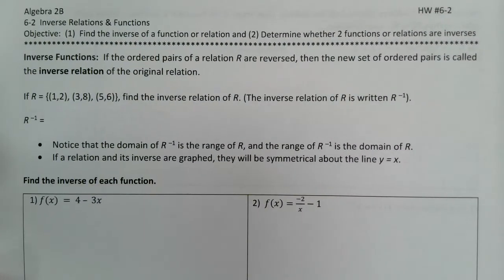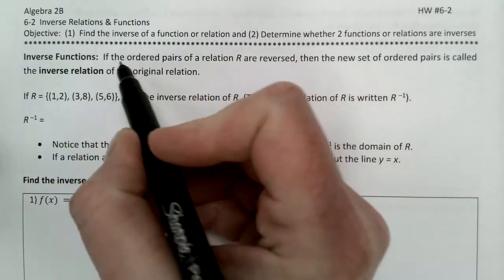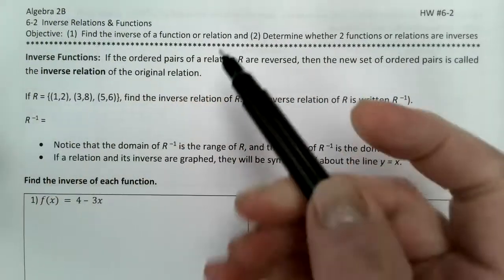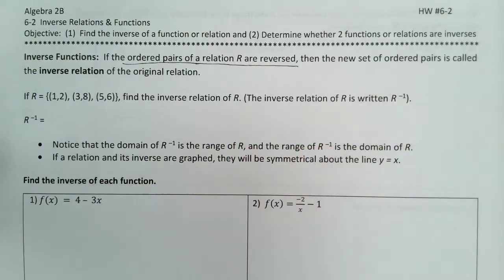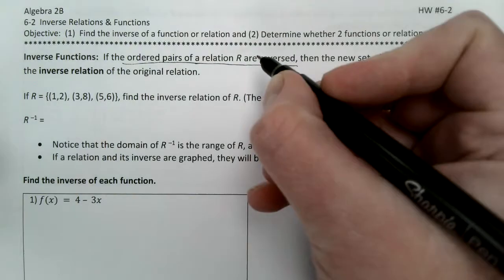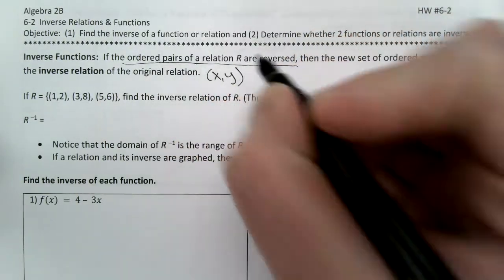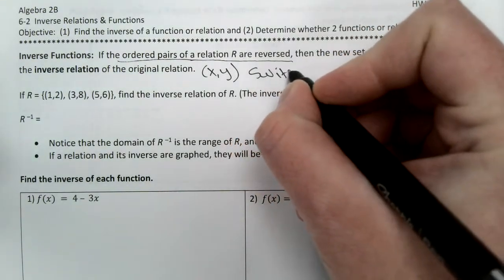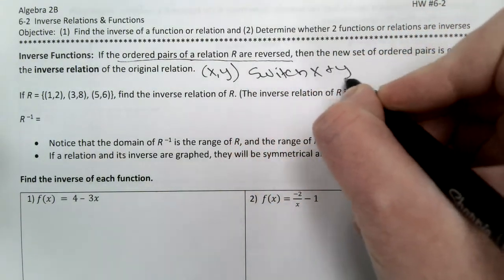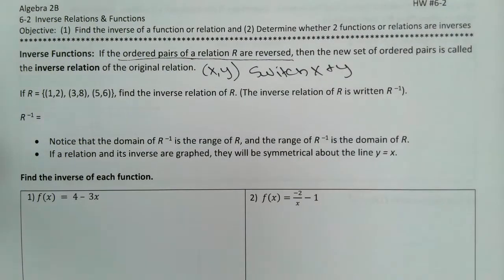Hey, Algebra 2. Today I'm going to teach you how to find the inverse of a function. The definition says the inverse of a function is if the ordered pairs are reversed. An ordered pair is simply x, y, and if they're reversed, we're going to switch them — switch x and y. We're going to keep coming back to this because when we find the inverse later, that is all we're doing: switch x and y.